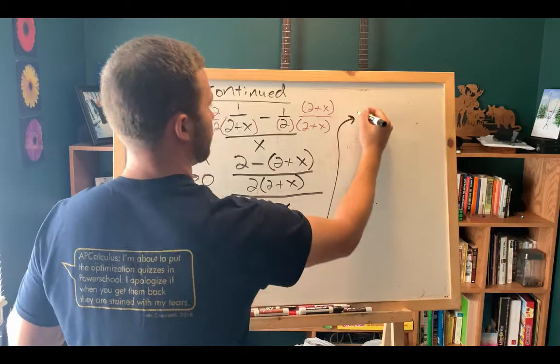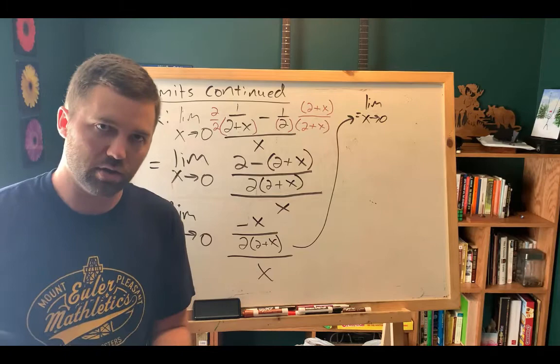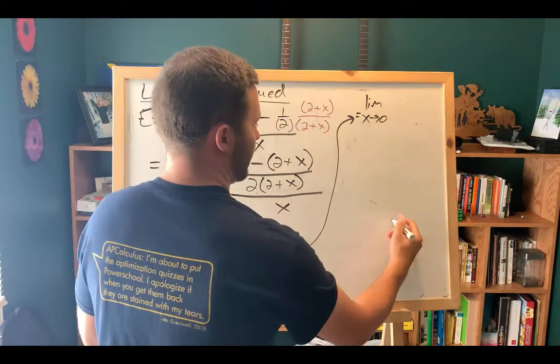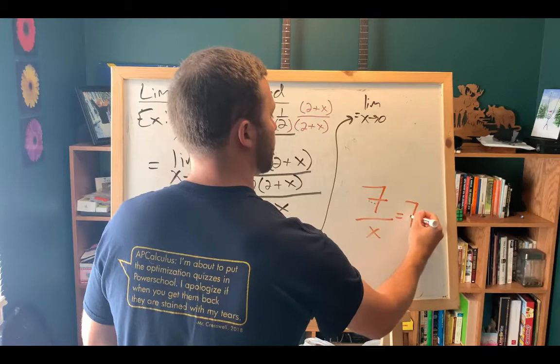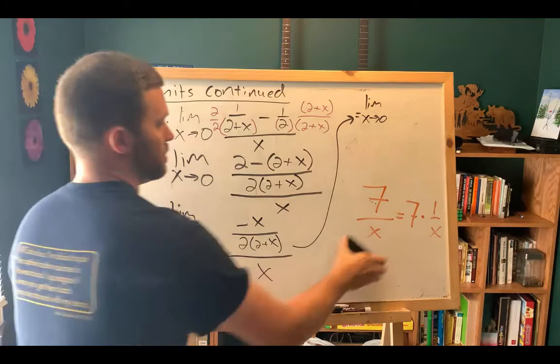So I've got the limit as x approaches zero, two minus two, that's zero, minus x. So on top, I'll have negative x, divided by two times two plus x, all of that divided by x. Now the question is, what do I do from here? Now, the step I'm going to show you, you don't necessarily need to do each time, but it does make the work a little more clear and easier to understand. This fraction here, I'm going to take out in front.